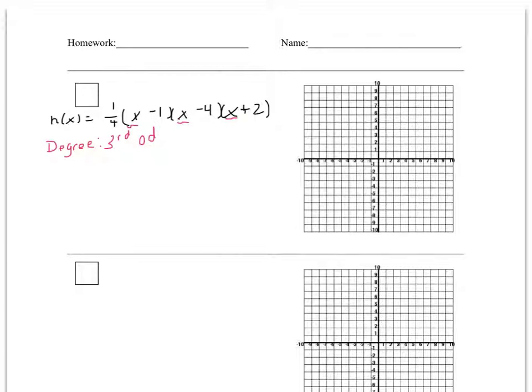A third degree is an odd function, and its end behavior is going to match the graph of x cubed. Its leading coefficient would be positive 1 fourth. So this is going to be like positive x cubed, where it falls to the left and rises to the right.